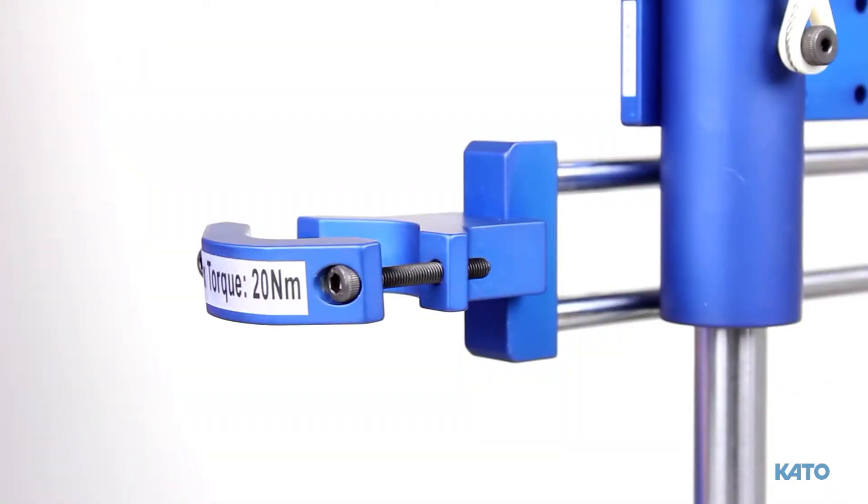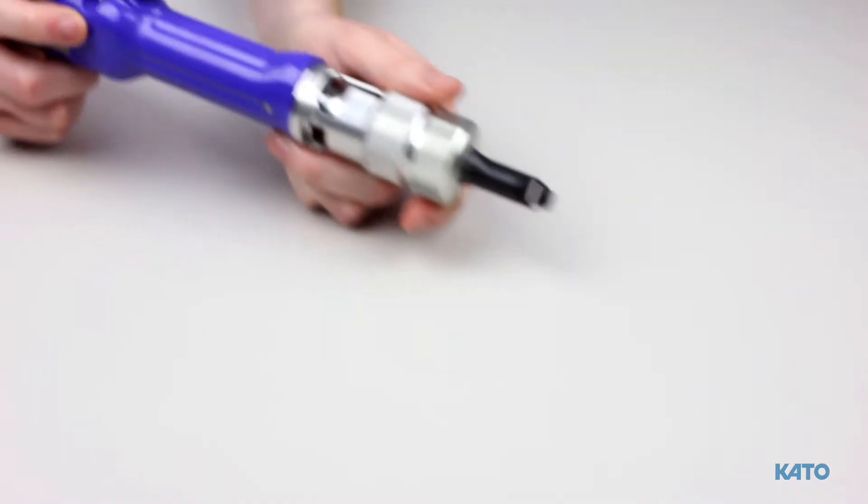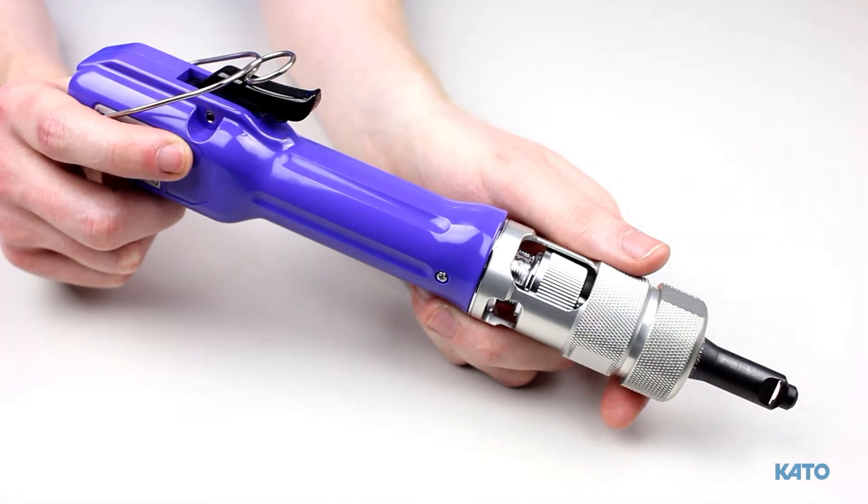After the strip feed has been attached to the strip feed reel bracket, let's put the installation tool into the vertical tool holder. In this case, it's our KFS20 brushless electric driver.